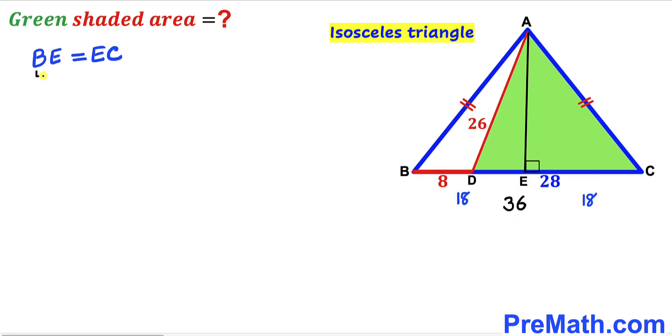We can see segment BD is 8 units, so the remaining segment DE is 18 minus 8, which gives us 10 units. Let's focus on right triangle AED and label this perpendicular AE as our height, lowercase h.